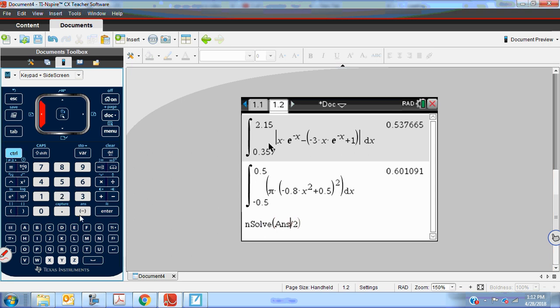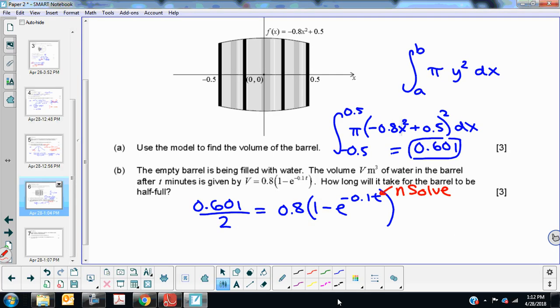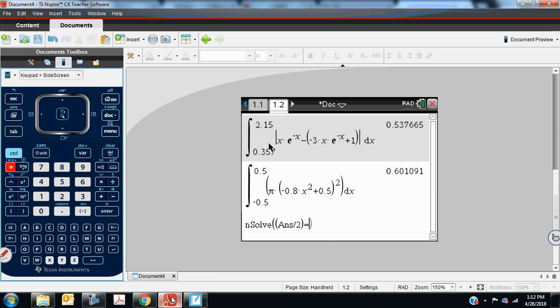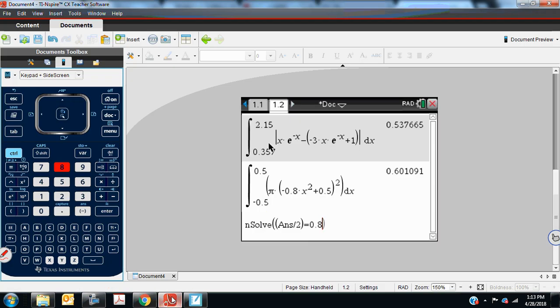Divided by 2 equals, the other side of this equation was the function with e in it, so 0.8, 1 minus e to the negative 0.1t.